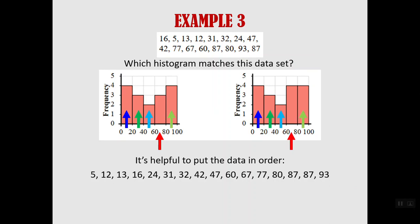The frequency on the left is a frequency of 3. And in the histogram on the right, the frequency is 4. So we've got to look for the numbers in the data set between 60 and up to 80 but not including 80. So we're going to include the 60, 67, and 77. We're not including that 80 because that goes with that next bar. So that's 3. So we can see that it matches the one on the left because our bar needs to only go up to 3.